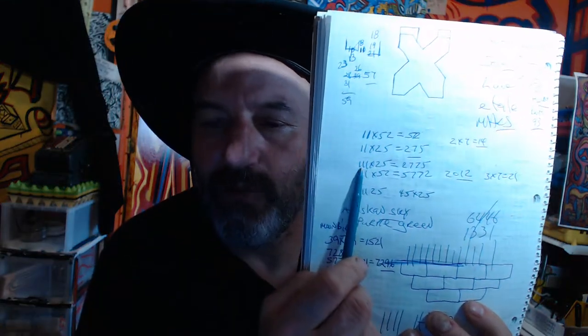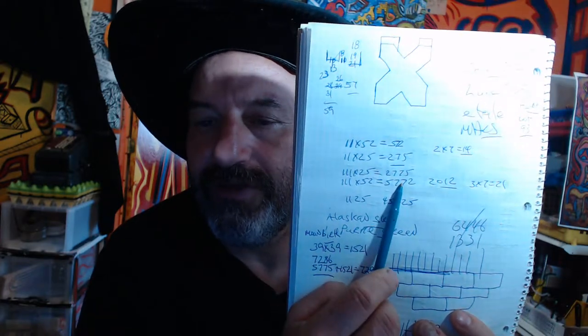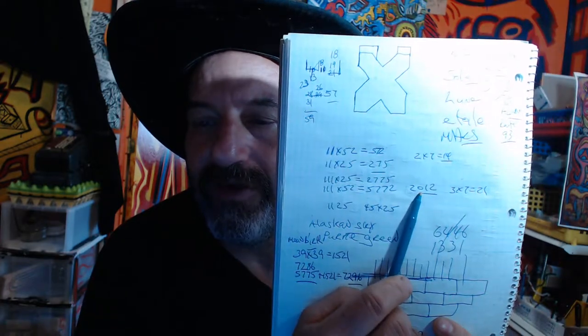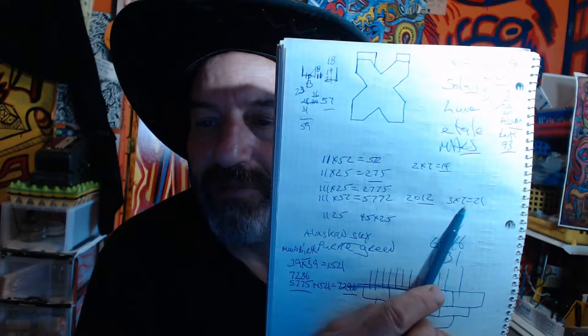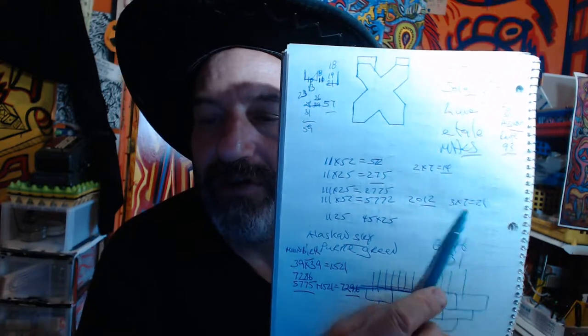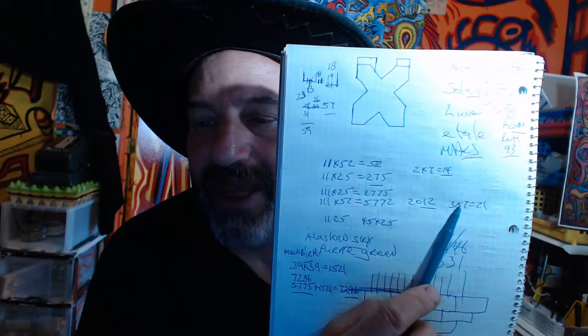When I take 52 times 111, the bricks on the wall, 52 times 111 equals 5772 or the year 2000. 3 times 7 is your 21. 3 times 4 is your 12. And that's the passage of 7.